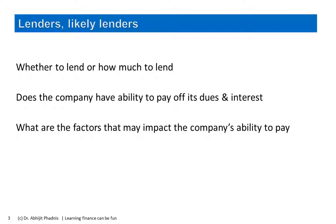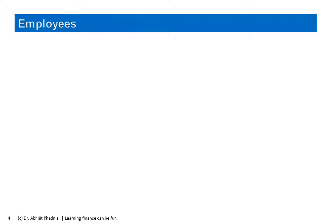Lenders also look at what factors may impact the company's ability to pay. The company has taken a loan, is obliged to pay interest and repay the principal — but are they able to do it? What are the factors which may actually impact the company's ability to pay, looking at its own financial position? This aspect also needs to be looked at, and lenders do look at it.